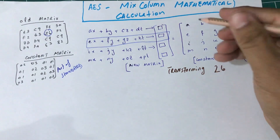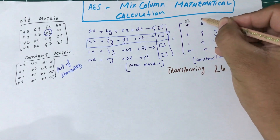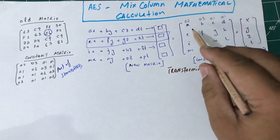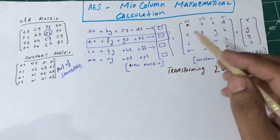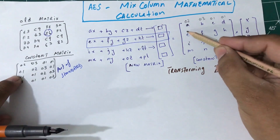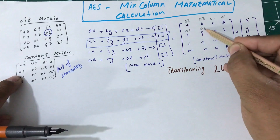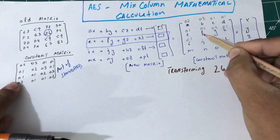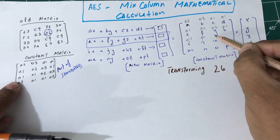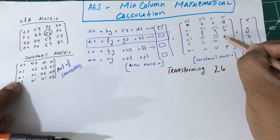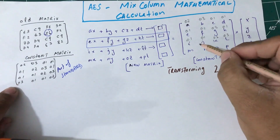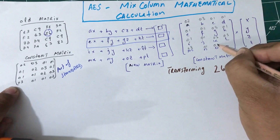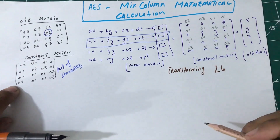I'm going to write my constant matrix here. So A is: 02 03 01 01 / 01 02 03 01 / 01 01 02 03 — these are hexadecimal numbers, by the way.